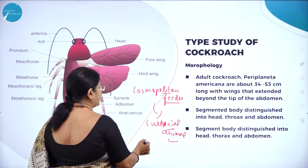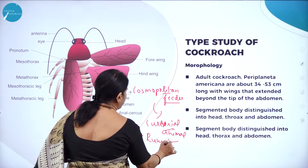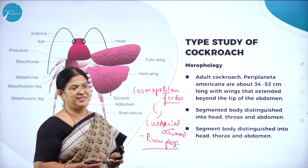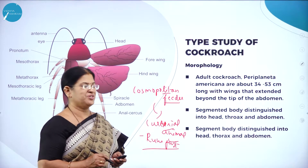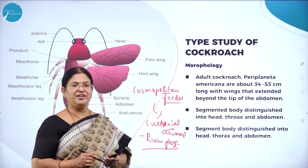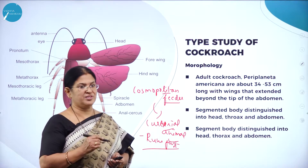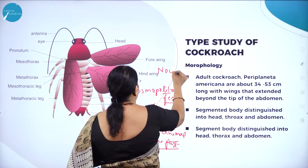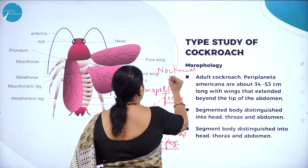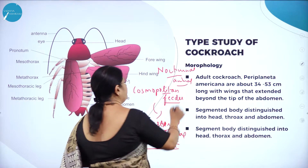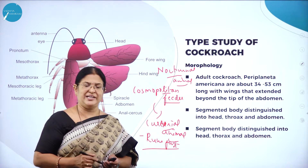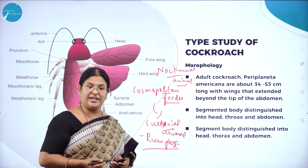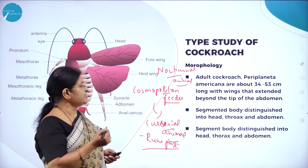A cursorial animal runs very fast. It is very difficult to catch a cockroach. Particularly in the midnight you can come across these cockroaches, because this animal is a nocturnal animal — very active during night time. Diurnal animals are those active during daytime. Bat, for example, is a nocturnal animal, very active during night.